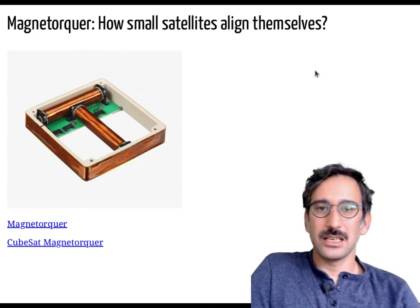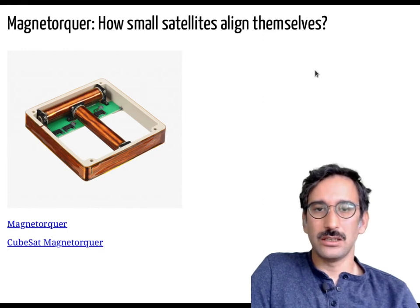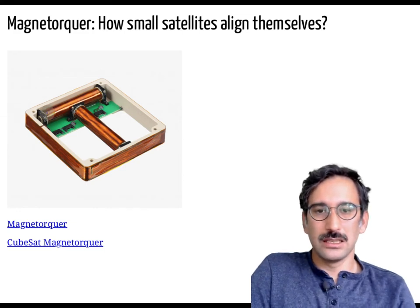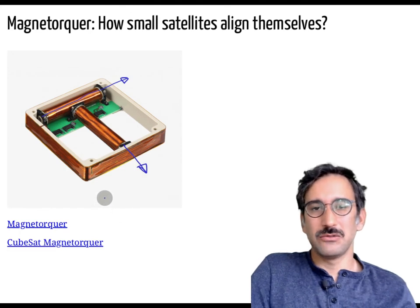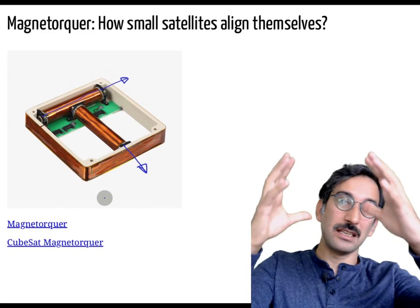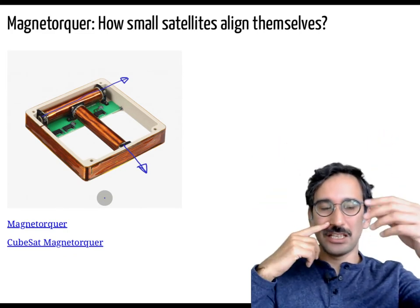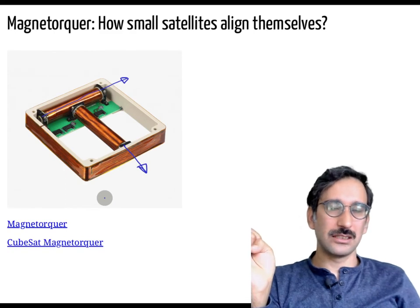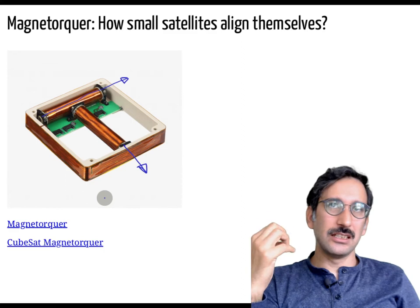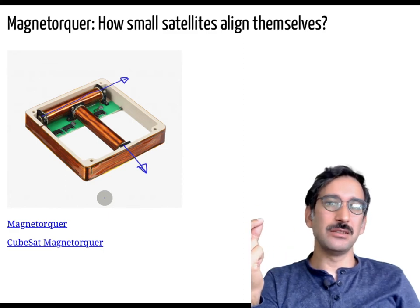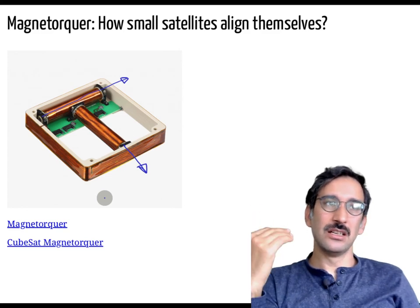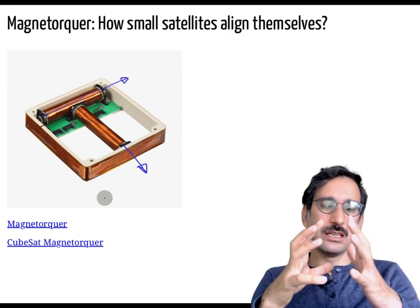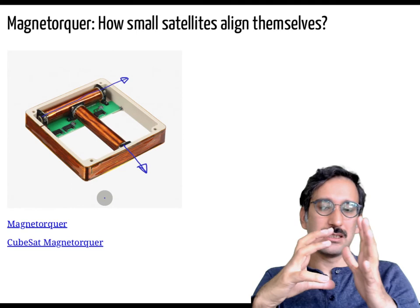One practical application is the magnetorquer, used especially in small satellites. It has two sets of coils oriented in different directions. Satellites need to align their antennas with Earth, and larger satellites use jet propulsion for maneuvering. However, fuel is limited — a satellite expected to operate for 20 years cannot afford to run out of fuel. Some larger systems use flywheels instead.